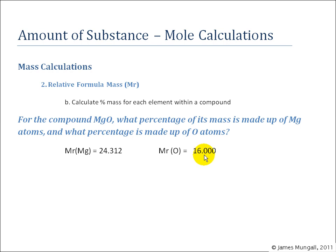So we want to know in percentage terms how many atoms, sorry, what mass is made up of each. And you might be looking at that formula thinking, well, it's a one-to-one ratio of the Mg to O, so therefore it's 50-50.